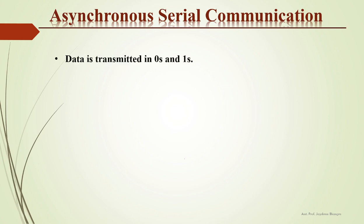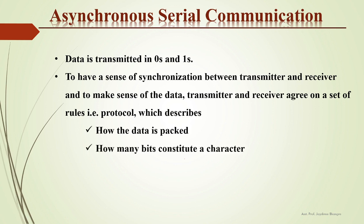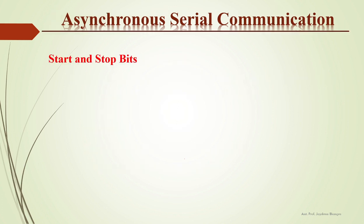In asynchronous communication, data is transmitted in zeros and ones form. To achieve synchronization between transmitter and receiver and to make sense of the data, both sides agree on a set of rules — a protocol — which describes how the data is packed, how many bits constitute a character, and when the data begins and ends. The asynchronous data frame includes start and stop bits for synchronization purposes.